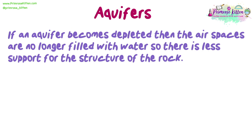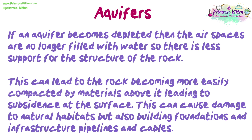If an aquifer becomes depleted, then the airspaces are no longer filled with water, so there is less support for the structure of the rock. This can lead to the rock becoming more easily compacted by materials above it, leading to subsidence at the surface. This can cause damage to natural habitats, but also building foundations and infrastructure pipelines and cables.